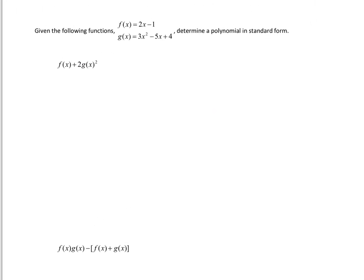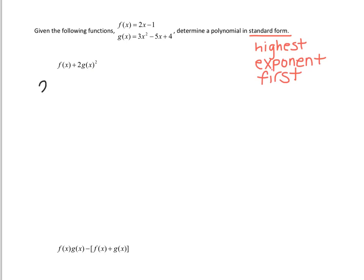Okay, so given the following functions, f of x and g of x, determine the polynomial in standard form. And what standard form means is just highest exponent first, and then so forth and so forth. You do the highest and the second highest and so on and so on. So what am I asking you to do here? I'm asking you to take f of x and add it to 2 times g of x squared. Okay, so let's write that. f of x is 2x minus 1. I could even put it in parentheses. So that's f of x plus 2 times g of x squared. And it looks like this is g of x. g of x is 3x squared minus 5x plus 4.